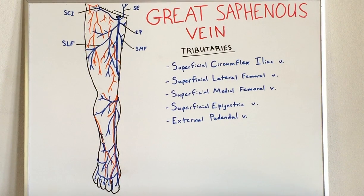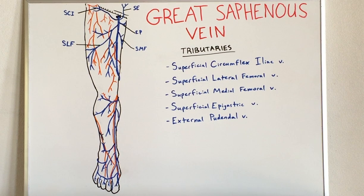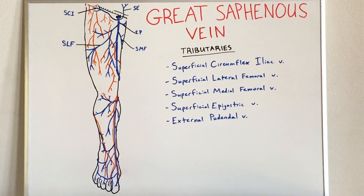The Great Saphenous Vein has some clinical significance. As it is so superficial on the body, when varicose veins are present, typically the Great Saphenous Vein is one that is able to be seen. Also, the Great Saphenous Vein is used in cardiac procedures to perform bypasses, so it is frequently removed so as to be used for this procedure. And that is the Great Saphenous Vein.